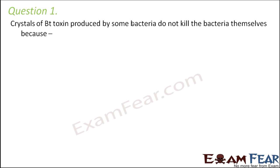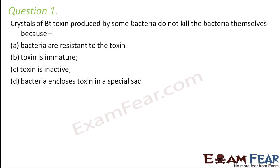Question number 1: Crystals of Bt toxin produced by some bacteria do not kill the bacteria themselves because — inside the bacteria it is present in an inactive form. Only when it is ingested by an insect does it get activated due to the alkaline medium of the insect's gut. The toxin is inactive, and this inactive form of toxin is known as protoxin. This protoxin gets converted into active toxin once ingested by the insect.